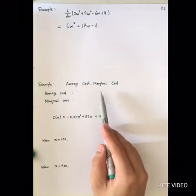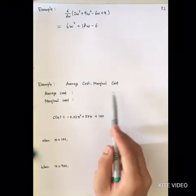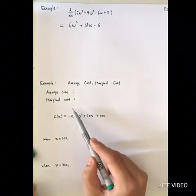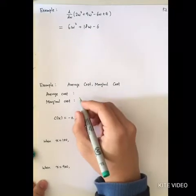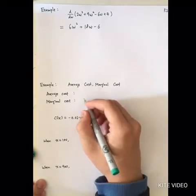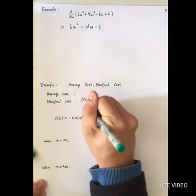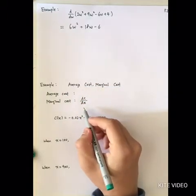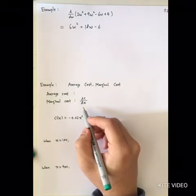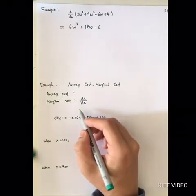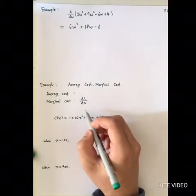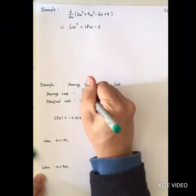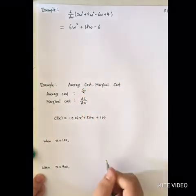Marginal cost means the change in total cost if we produce one more unit of output. Therefore, marginal cost is the change in cost dc with respect to the change in output dx, where x is the output. For the average cost, this is simply equal to the total cost divided by the number of outputs.